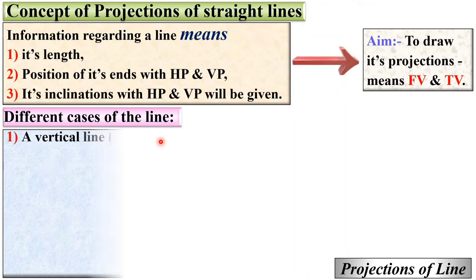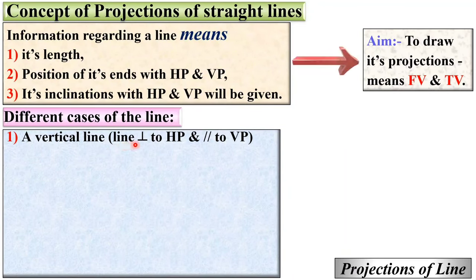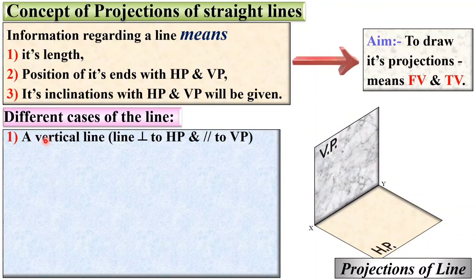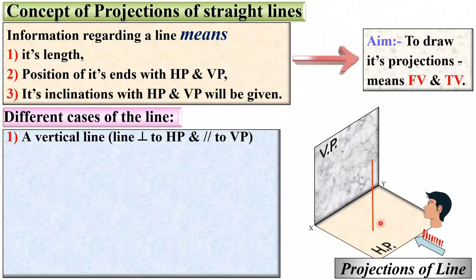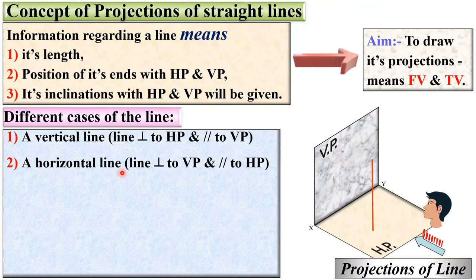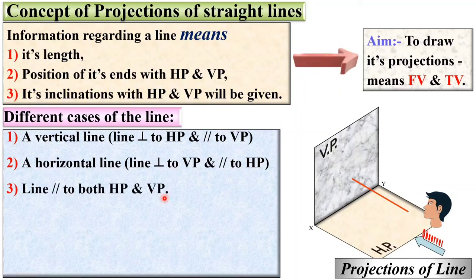Now let us see the different cases of the line. A vertical line means the line is perpendicular to HP and parallel to VP. Here you can see the horizontal plane and the vertical plane, and the vertical line is perpendicular to HP and parallel to VP. Next, a horizontal line means a line perpendicular to VP and parallel to HP. Next, a line parallel to both HP and VP — in short, this line is parallel to both HP and VP.